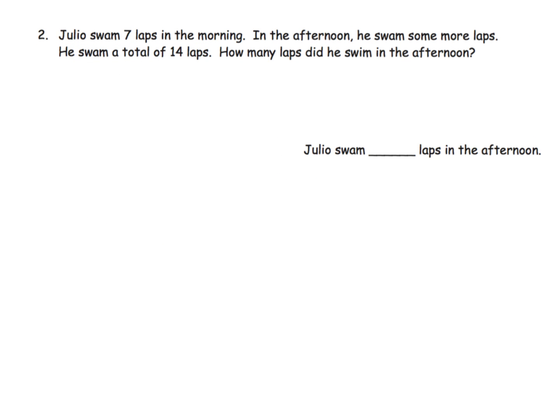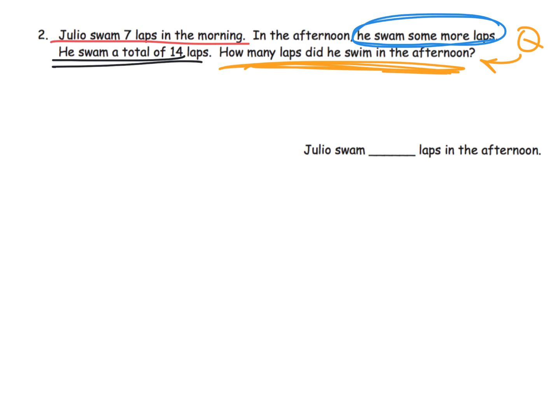Julio swam seven laps in the morning. In the afternoon, he swam some more laps, so we don't know that number. And then it says he swam a total of 14 laps. So the big question that we're supposed to figure out is how many laps did he swim in the afternoon? So there is our big question right there.